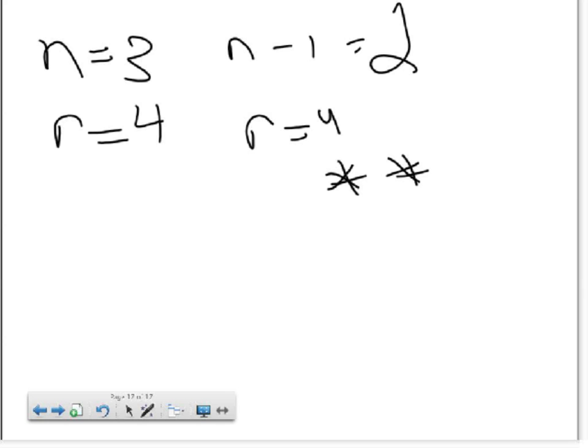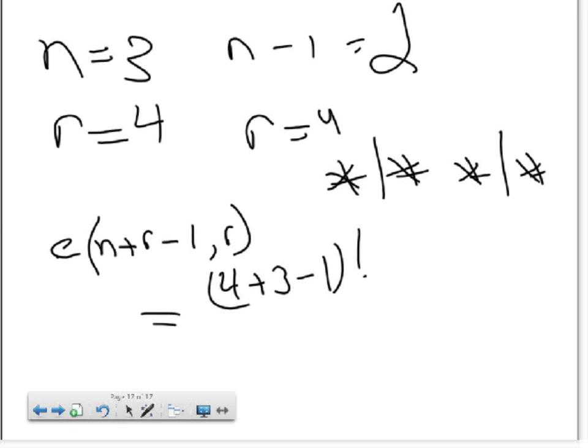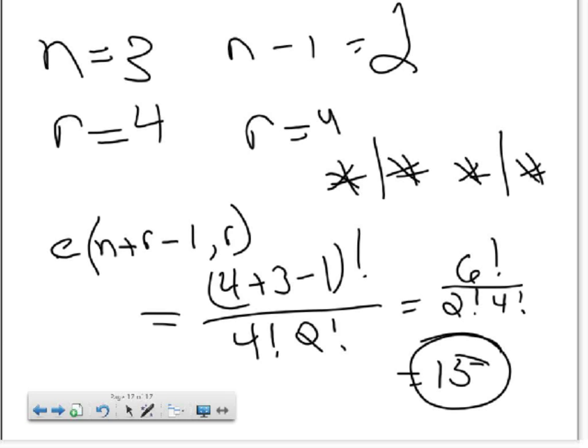So we had one, two, three, four stars, and we had two bars. We can see from the definition that this will be a combination of n plus r minus one choose r. If we solve this out using our numbers, we have four plus three minus one factorial over four factorial, two factorial, which equals six factorial over two factorial, four factorial, which equals 15, which is what we got when we iterated through the combinations.